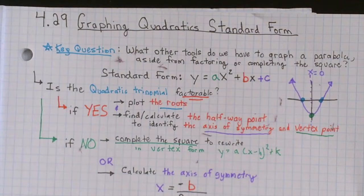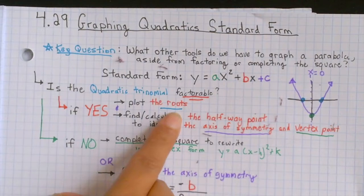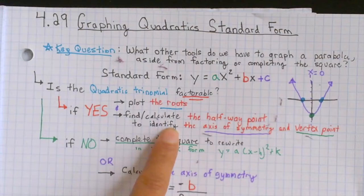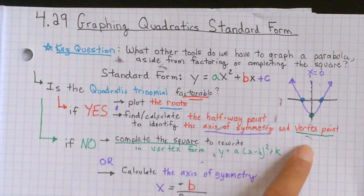So today as we already know, the standard form is when y equals ax squared plus bx plus c. And the question we always must ask ourselves is, is this quadratic trinomial factorable? If yes, plot the roots like we have here, and then find or calculate the halfway point to identify the axis of symmetry and the vertex point.